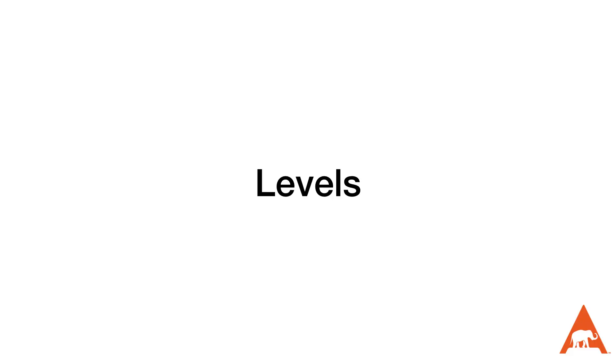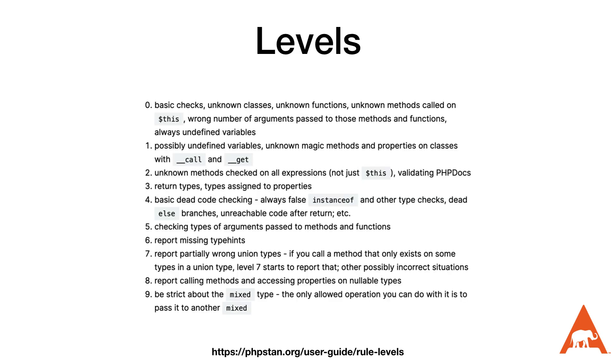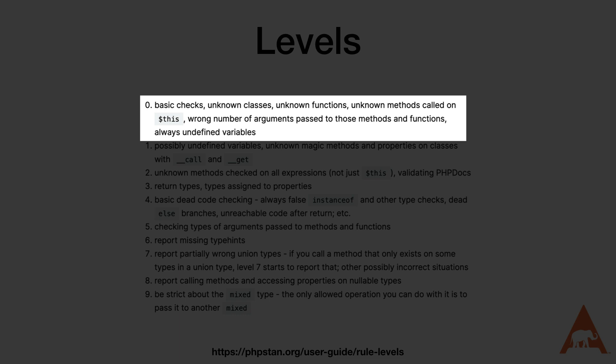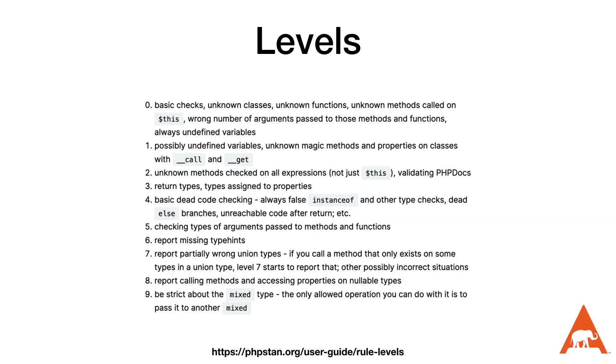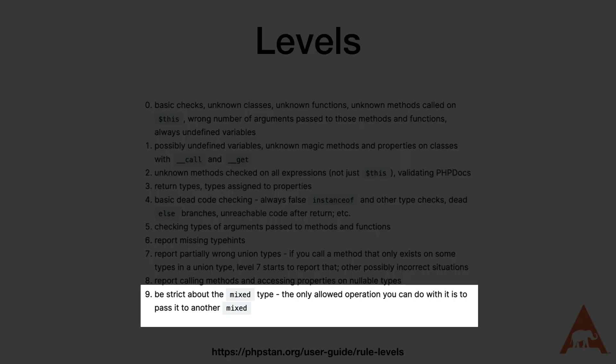There are two ways to get errors down to a more manageable level. The first is to adjust the level. The level parameter controls both the number of errors PHPStan finds and how much time it spends running, because the higher the number, the more rules PHPStan runs against our code. At level 0, we're running basic checks for things like unknown classes, unknown functions, and unknown methods. At around level 5, it checks types of arguments passed to methods and functions. At level 9, it's extra strict about mixed types. I'll start at level 3 as it gives a good balance, but I want to reach at least level 5 for that argument checking.